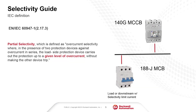What happens when Total Selectivity is not an option? In that case, we look at Partial Selectivity, which is defined per IEC 60947-1 as Overcurrent Selectivity where, in the presence of two protection devices against overcurrent in series, the load side protection device carries out the protection up to a given level of overcurrent without making the upstream device trip.